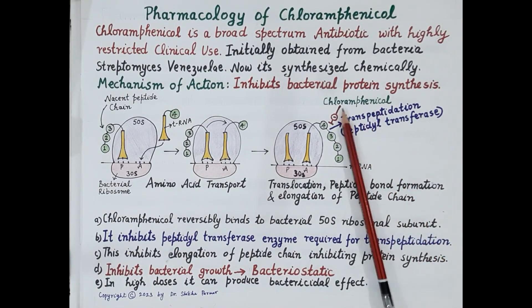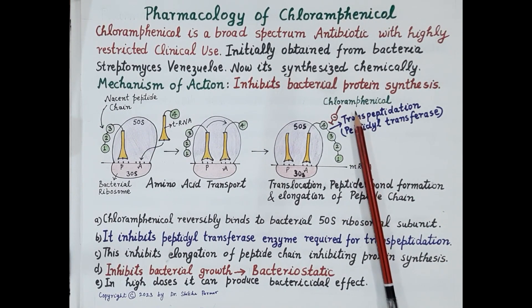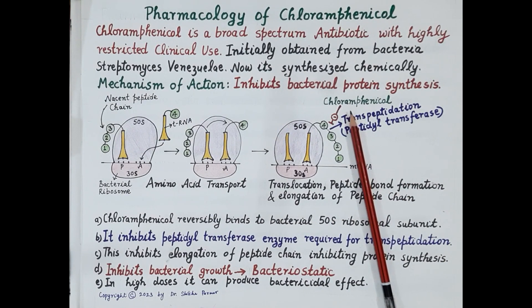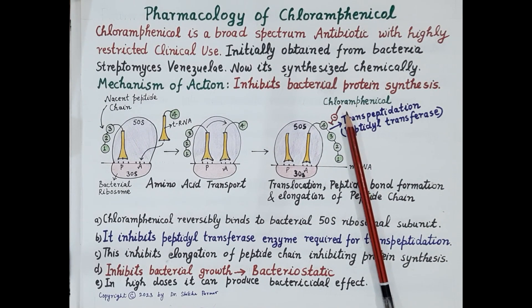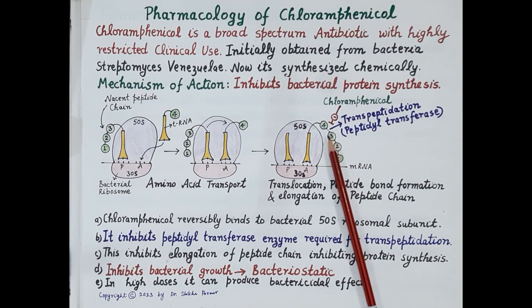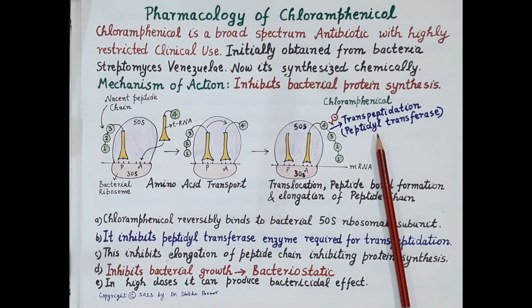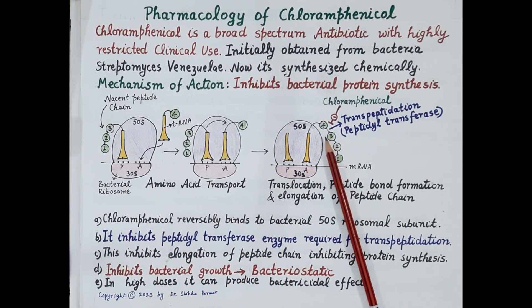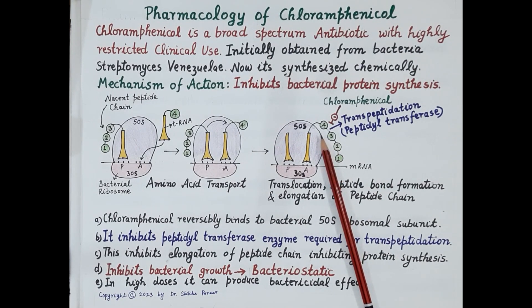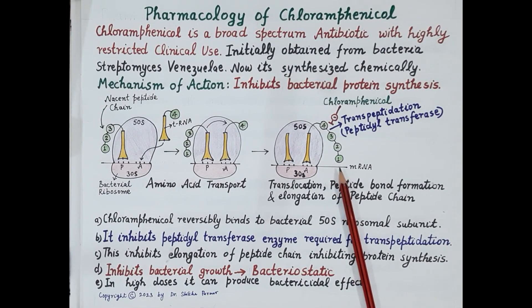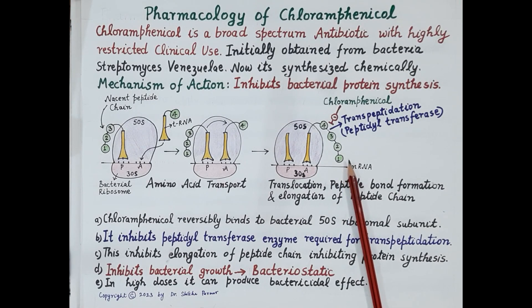Chloramphenicol reversibly binds to the bacterial 50S ribosomal subunit and then inhibits the enzyme peptidyl transferase, which is required for transpeptidation. As a result, the peptide bond is not formed between the newly attached amino acid and the nascent peptide chain, preventing elongation of the peptide chain and thus inhibiting bacterial protein synthesis.